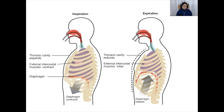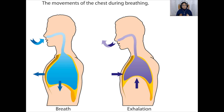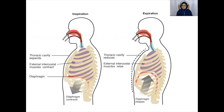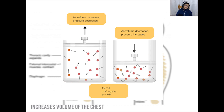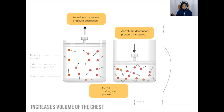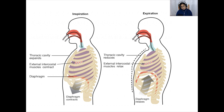There are two movements that bring about ventilation: those of the ribs and those of the diaphragm. If you put your hands on your chest and breathe in deeply, you would feel your ribs moving upwards and outwards, moved by the intercostal muscles. The outer, external intercostals contract pulling the ribs up, and at the same time the muscles of the diaphragm contract, pulling the diaphragm down into a more flattened shape. Both movements increase the volume of the chest and cause a slight drop in pressure inside the thorax compared to outside, and it is at this point that air enters the lungs.